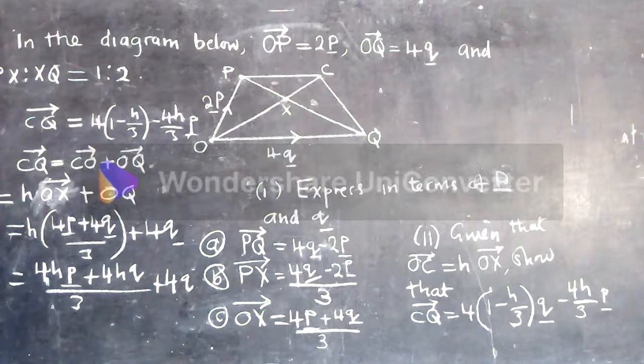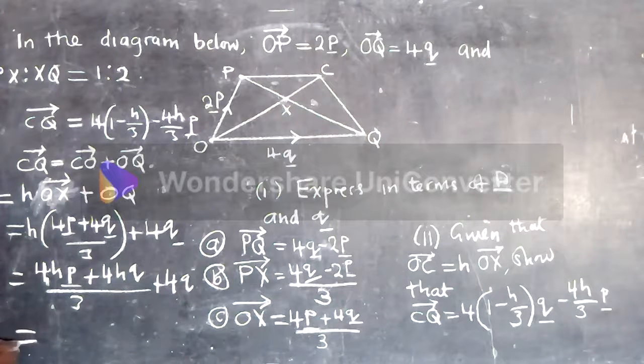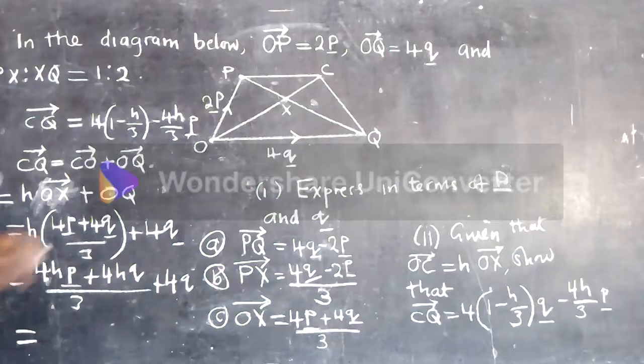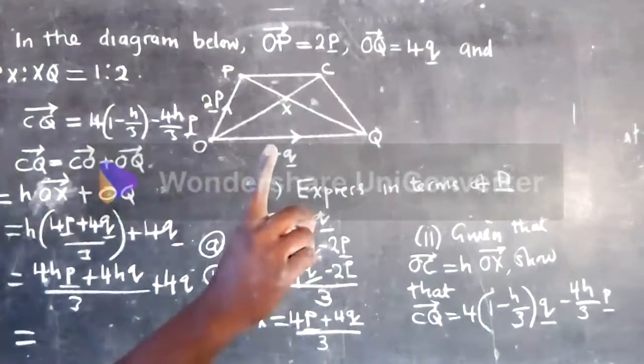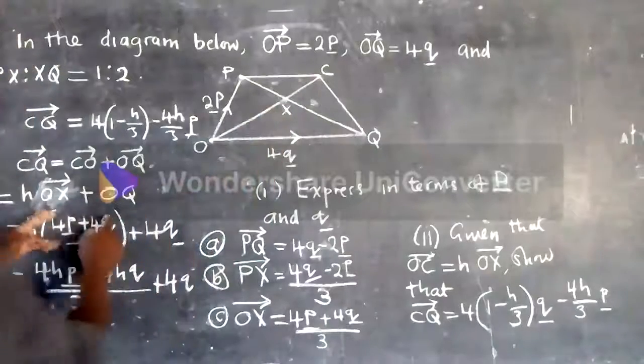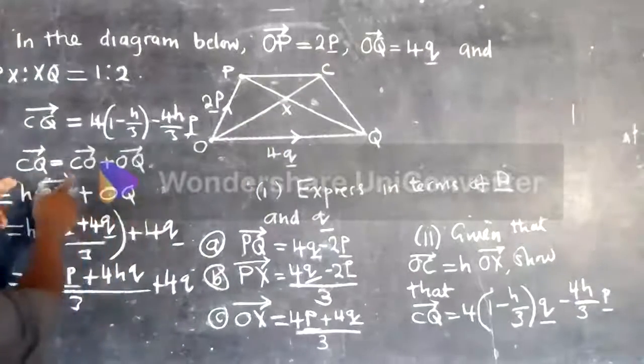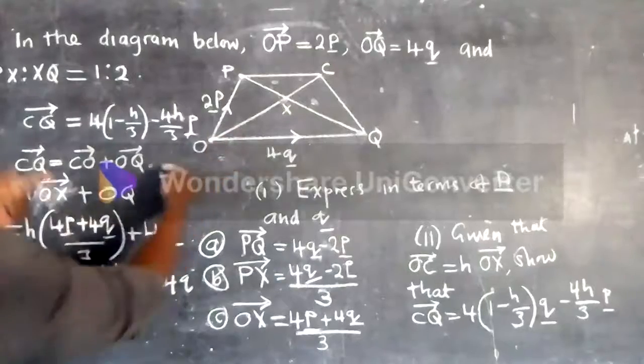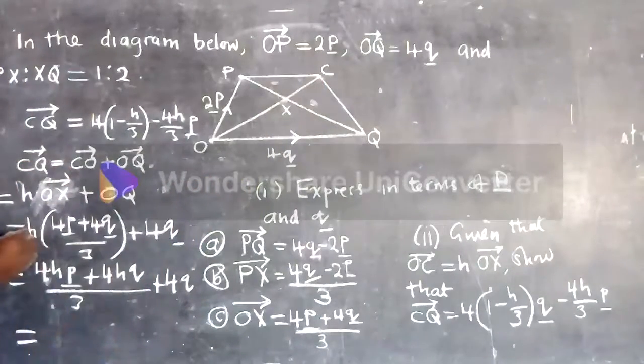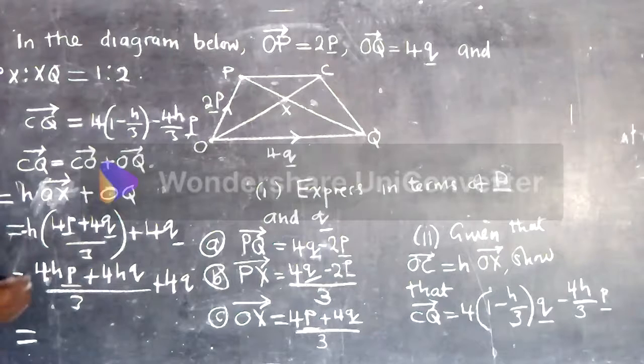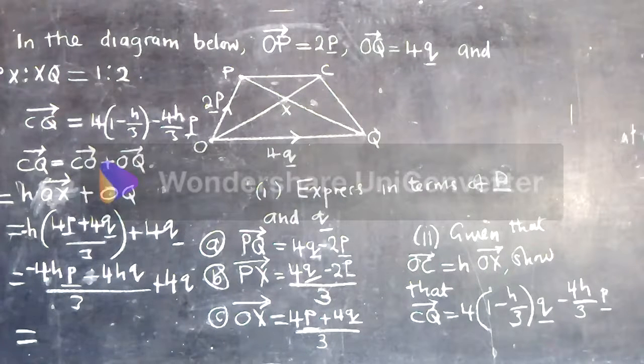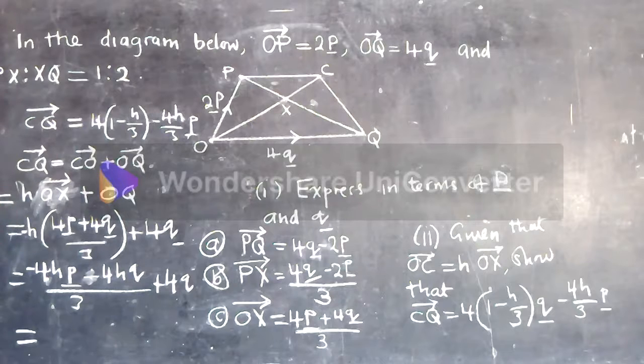The next step, we need to separate this. But wait, there's a mistake. Look at this. OC is equal to this, but in our case we are using CO. So we need to put negative here. This should be negative.